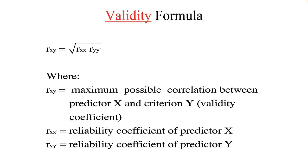This is the basic formula for a validity coefficient. It is the degree to which available evidence supports inferences made from scores on selection measures. This formula shows that the relationship between two variables, noted as X and Y, and their relationship is noted as R sub XY, is equal to the square root of the cross product of X and Y's reliability. If the reliability of either X or Y is zero, then the area under the square root symbol reduces to zero, and the relationship between X and Y is therefore zero.